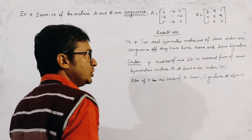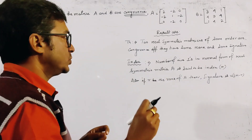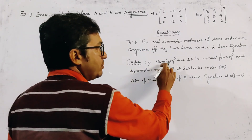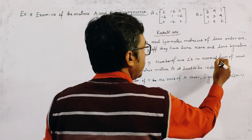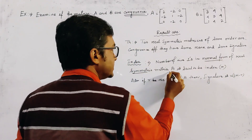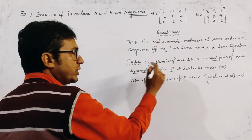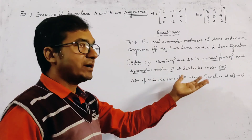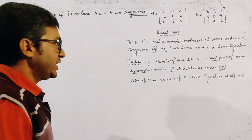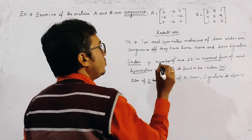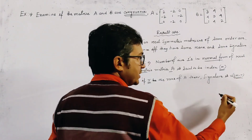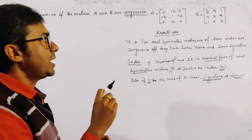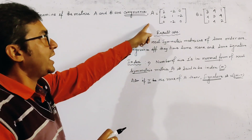What is signature? To find the signature of a matrix, we first find the index. The index is the number of positive ones in the normal form of a real symmetric matrix, and it is generally denoted by M. The signature is given by 2M minus R, where R is the rank. So we need to find the normal forms of A and B.